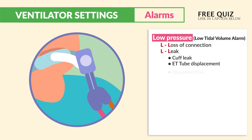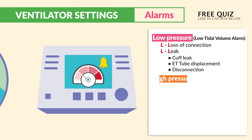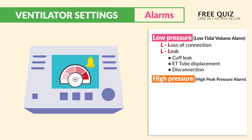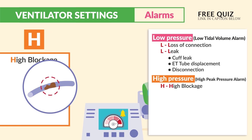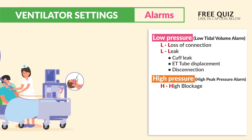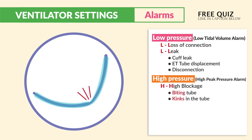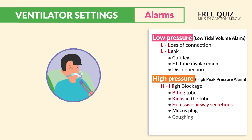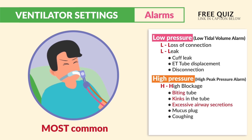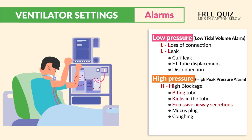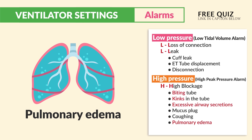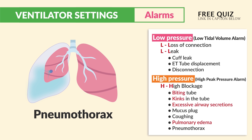High pressure alarm — also called high peaked pressure alarm — think H for high blockage: anything that can cause a blockage of airflow resulting in peaked airway pressure. This is typically from biting the tube, kinks in the tube, excessive airway secretions like a mucus plug, or coughing. A client fighting the ventilator when waking from sedation is also common. More serious causes include pulmonary edema and pneumothorax.